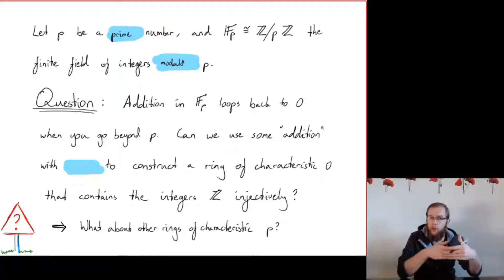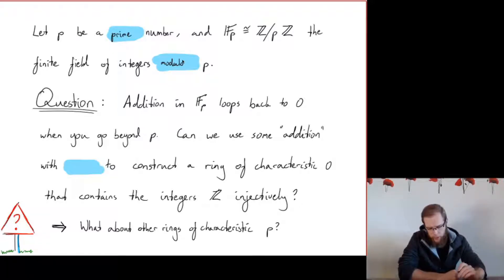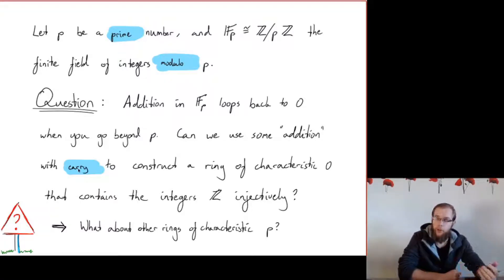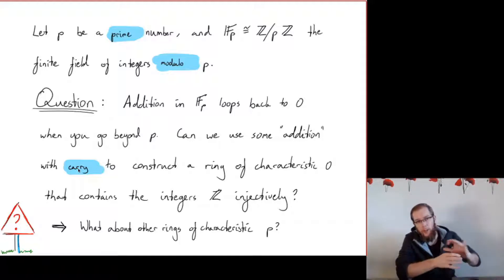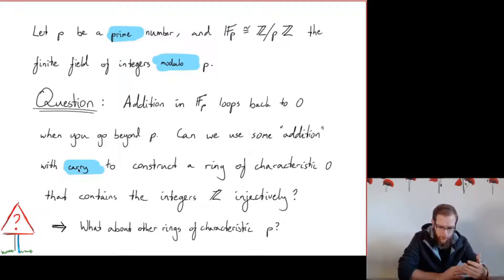As you all know, when you do modular arithmetic you loop back to zero when you get to the number p. Now, can we use some sort of addition with carry to construct a ring of characteristic zero — a ring where the integers Z inject into this new ring? And if we can do this with Fp, maybe we can also do it with other rings of characteristic p.